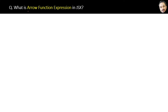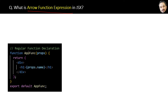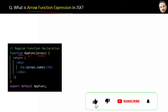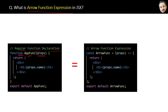What is the arrow function expression in JSX? Normally we use this way to write the code for a component using the function keyword and receiving the parameters in round brackets if required — that is what we call a regular function declaration. Now the same function can also be written like this using the arrow function expression.